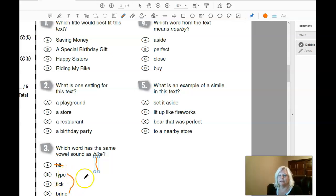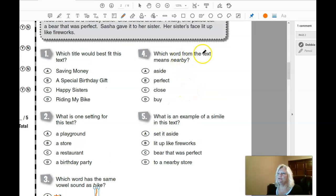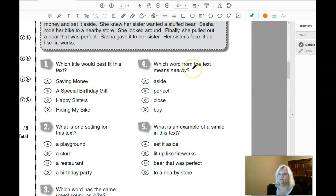We're listening for the I sound: I, I, bring. Number four: Which word from the text means nearby? So something that is nearby, is it aside, is it perfect, is it close, or is it buy?